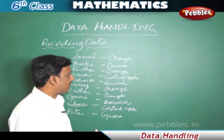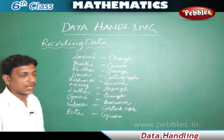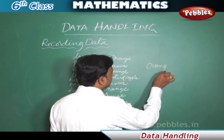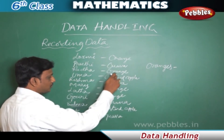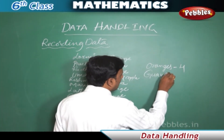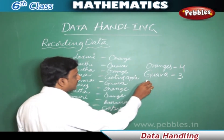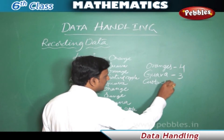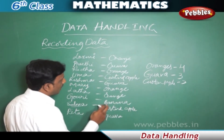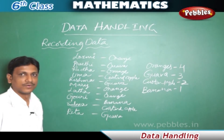Lakshmi gave this list to her mother for arranging the fruits. The mother had to find out which fruit was required in which quantity. Since the list was small, she counted manually: oranges - four people need oranges; guava - three people need guava; custard apple - two; and banana - one.